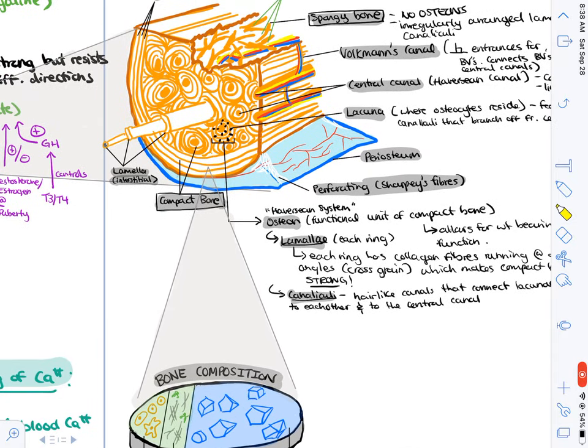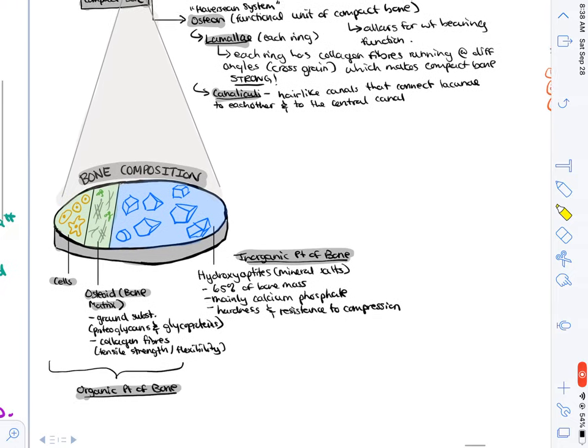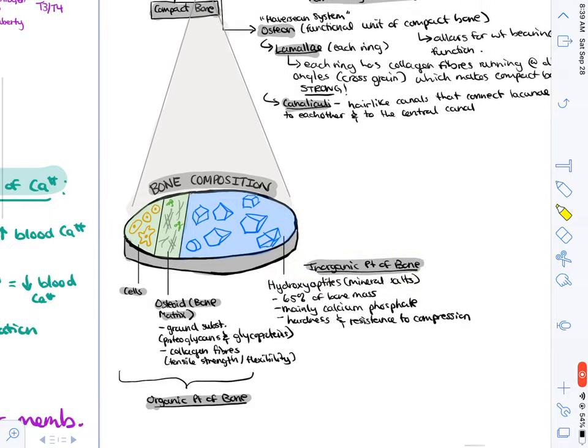We've covered compact and spongy bone. Now I just want to zoom into the molecular components of bone. One thing I want to highlight is that the inorganic part of bone - that's where you have the mineral salts, the hydroxyapatites - they actually make up most of bone, so 65% of the bone's mass. When we look at the organic portion of bone, most people think of the cells as the organic portion, but also don't forget that osteoid, which is also the bone matrix, contains ground substance and protein fibers like collagen, which help in terms of the tensile strength and flexibility of bone. So bone strength is not just due to calcium, it is very much also due to collagen fibers as well.